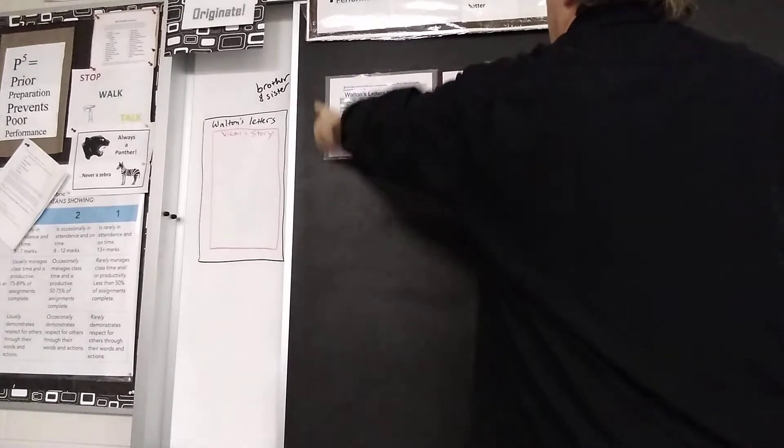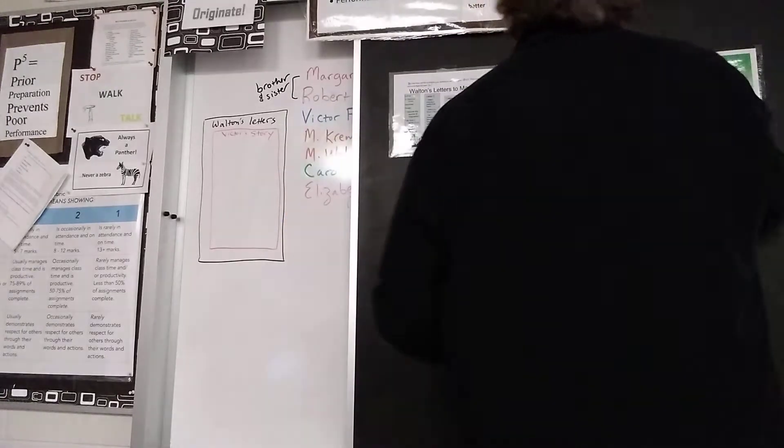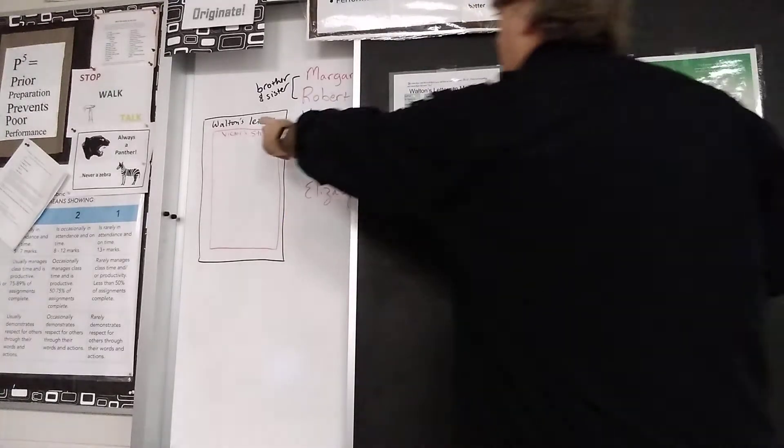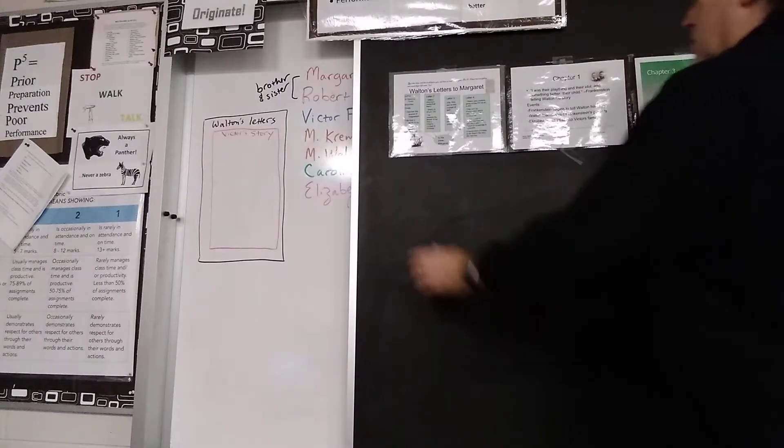The gray here is Robert Walton's frame. The black is Victor's story. So we're moving along.